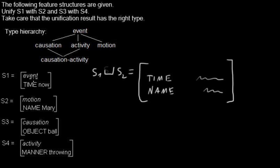In this case, S1 is from type event, so in the hierarchy it's here, and S2 is from type motion. That means if we unify the feature structures with each other, the type of the result will be the infimum. That means you take the type that is as high as possible in the tree but has all types that we were based on above it.